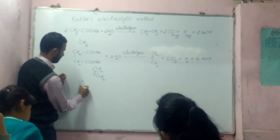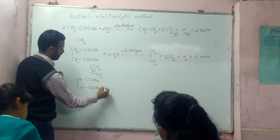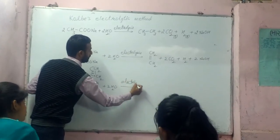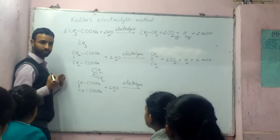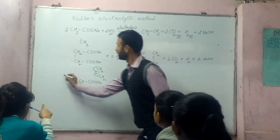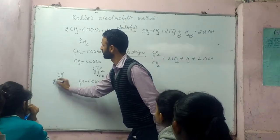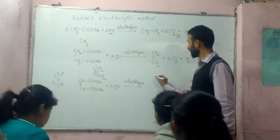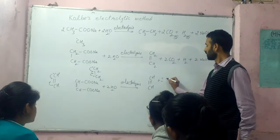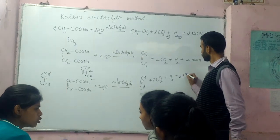For another dicarboxylate, the product formed is C₂H₂ (ethyne). In this case, the free radical formed is C≡CH. These free radicals combine to give C₂H₂, along with carbon dioxide and hydrogen gas.